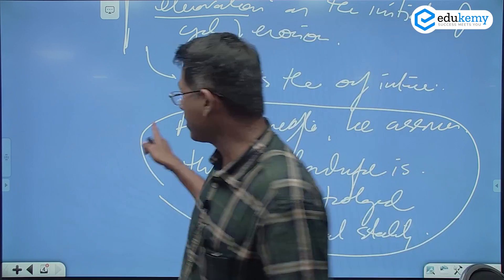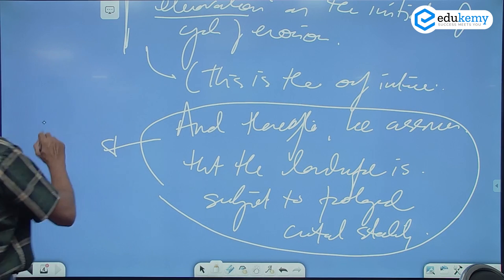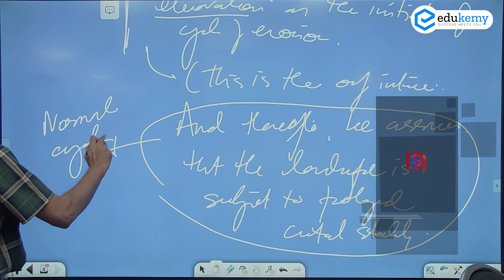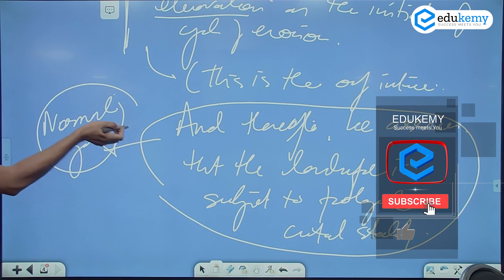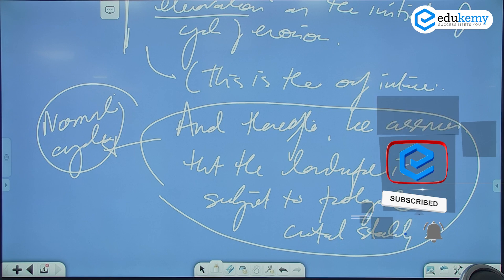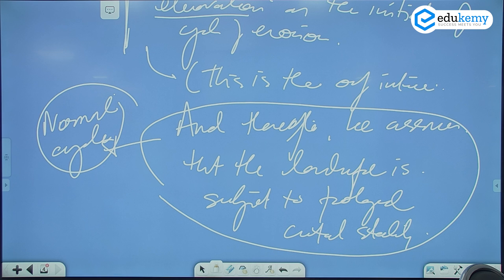So here, an important element here of normal cycle. When I use the word normal cycle, this is one of the important aspects of normal cycle, that the landform will witness upliftment once, that too very rapidly, so rapid that you can ignore it. And thereafter, there is prolonged crustal stability.